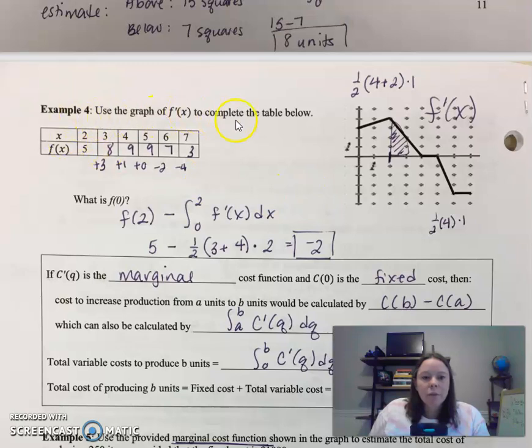So use the graph of the derivative to complete the table below. Now this is an interesting one. So notice in the table, they've started with two. So at two, you know the function value as five.